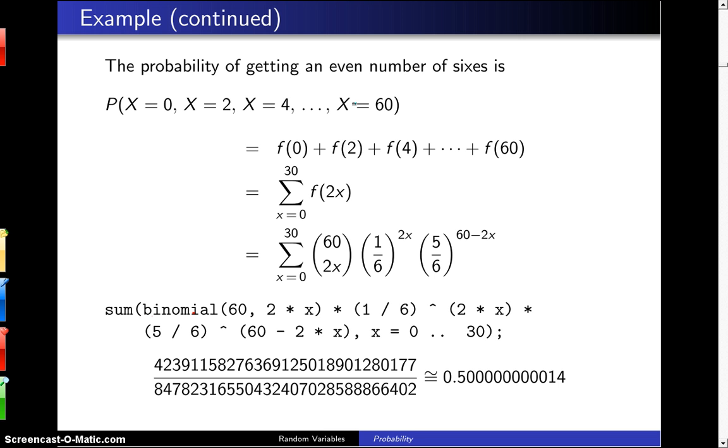Since those are mutually exclusive events, you're going to have f of 0 plus f of 2 plus f of 4 all the way up to f of 60, and that can be written as a summation in this fashion. And when you take the probability mass function that we derived two slides ago and put it in for the probability mass function, you will get that expression.